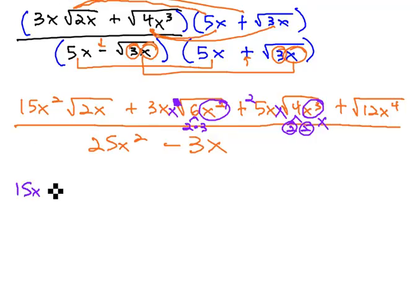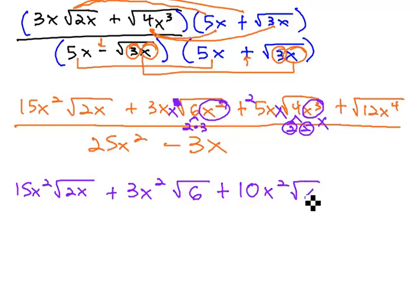We've got that 15x squared root 2x plus 3xx is 3x squared, square root of 6. The x's are gone. Plus 2 times 5 is 10. xx becomes x squared.